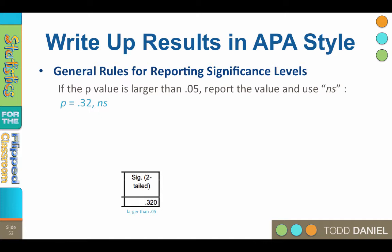If the p-value is larger than 0.05, report the actual number followed by NS. The NS is in italics, as is the letter P. For example, P equals 0.32, NS. NS, of course, stands for non-significant.